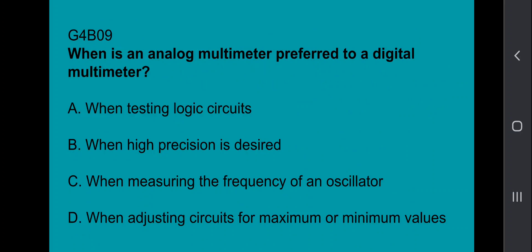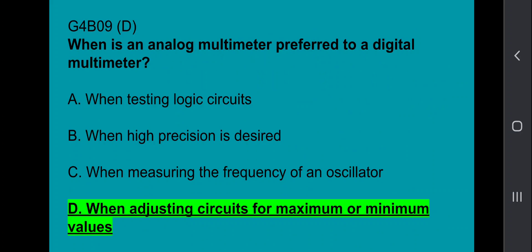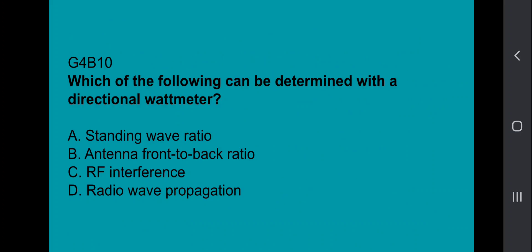G4B09, when is an analog multimeter preferred to a digital multimeter? That's when adjusting circuits for maximum or minimum values. G4B10, which of the following can be determined with a directional wattmeter? Standing wave ratio, SWR.